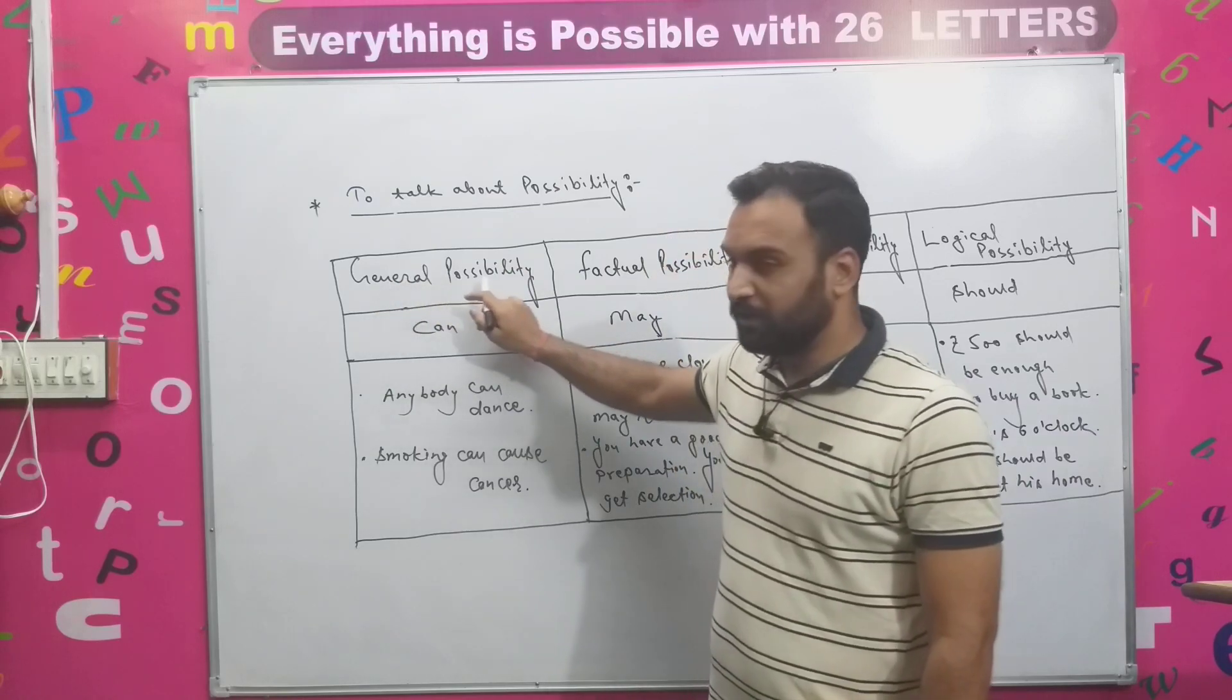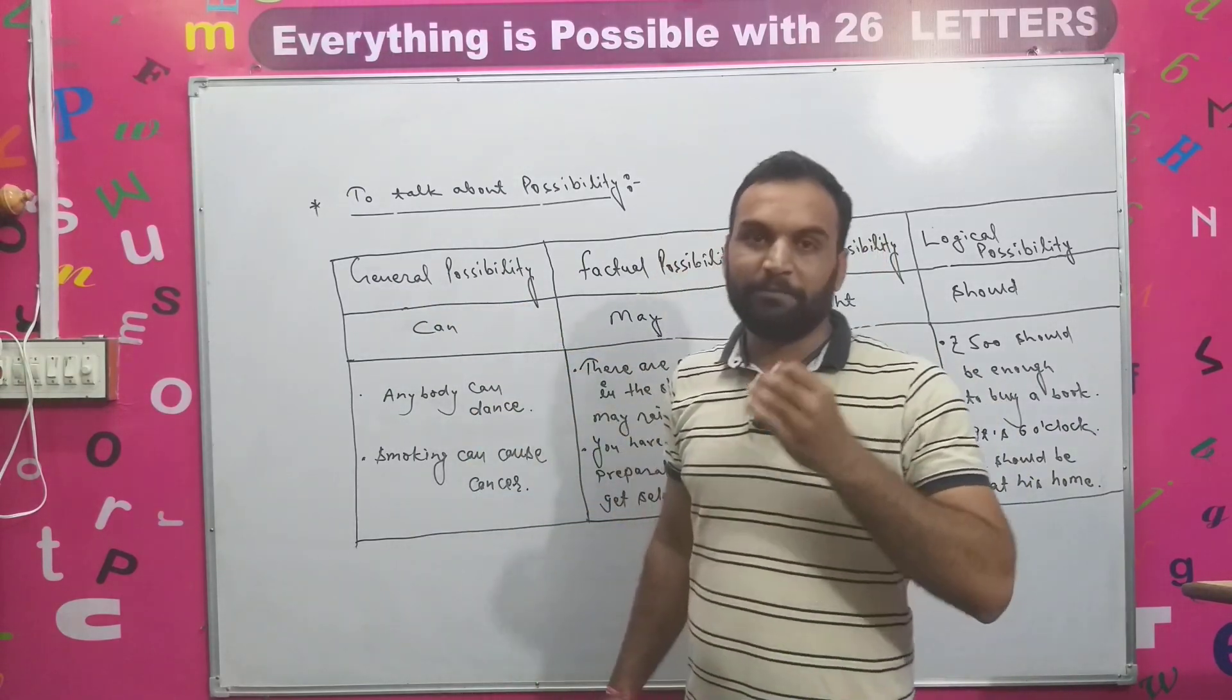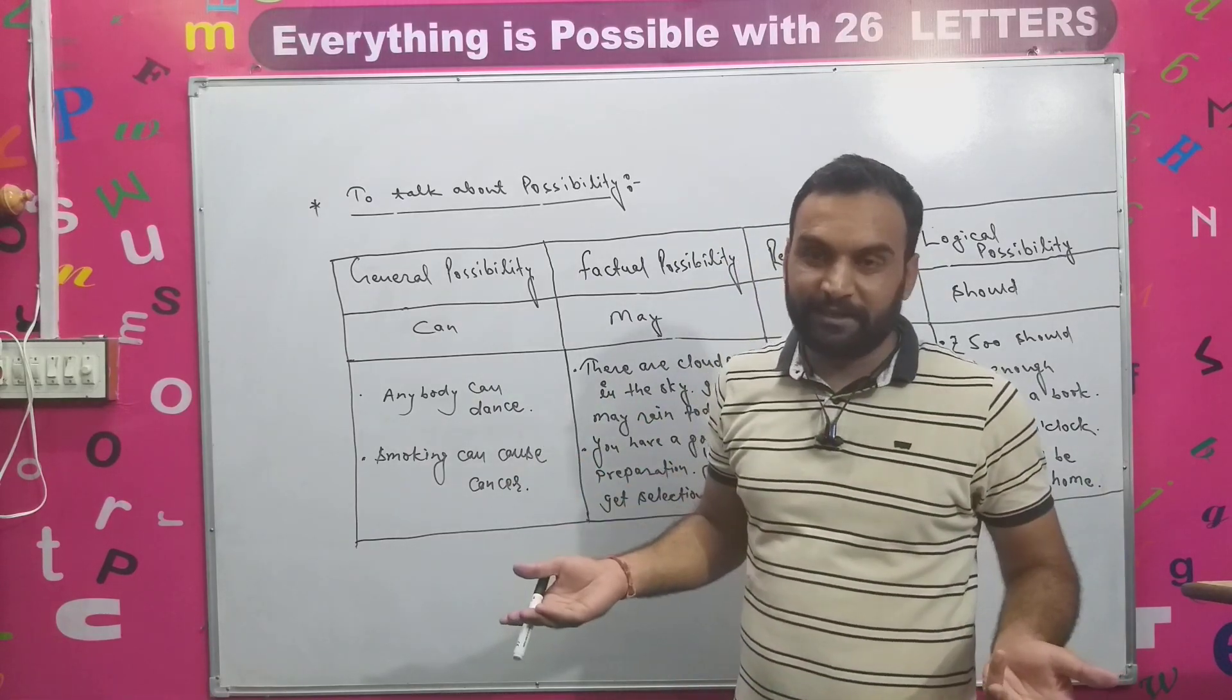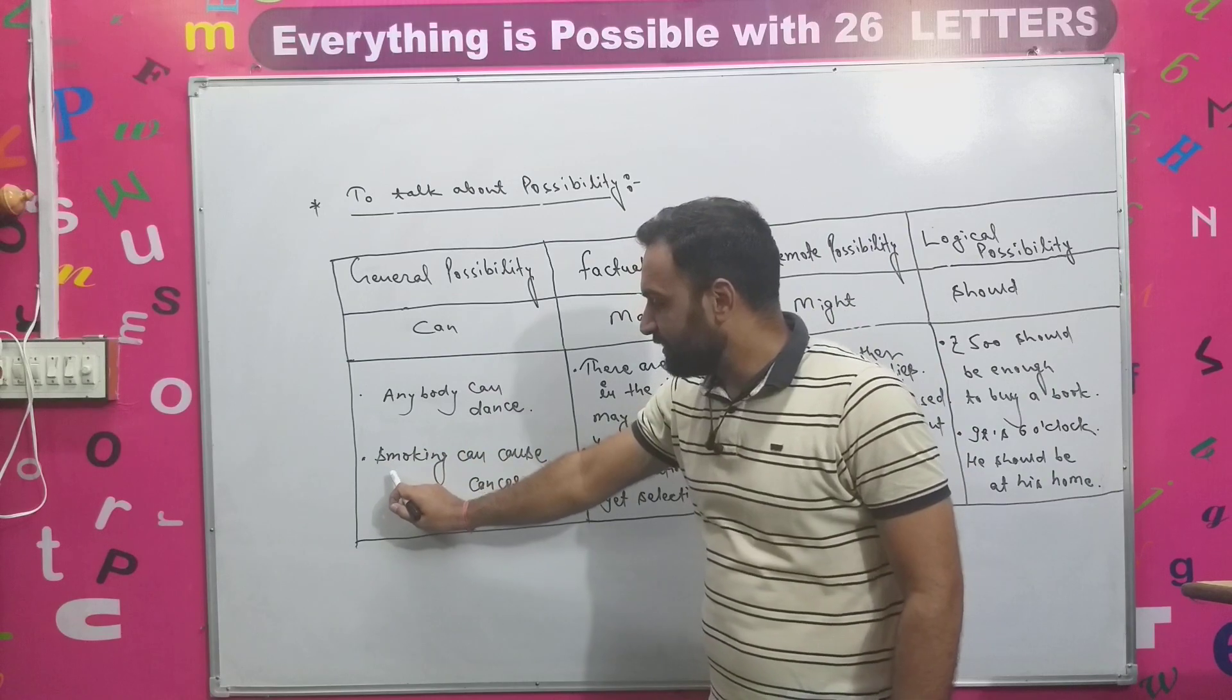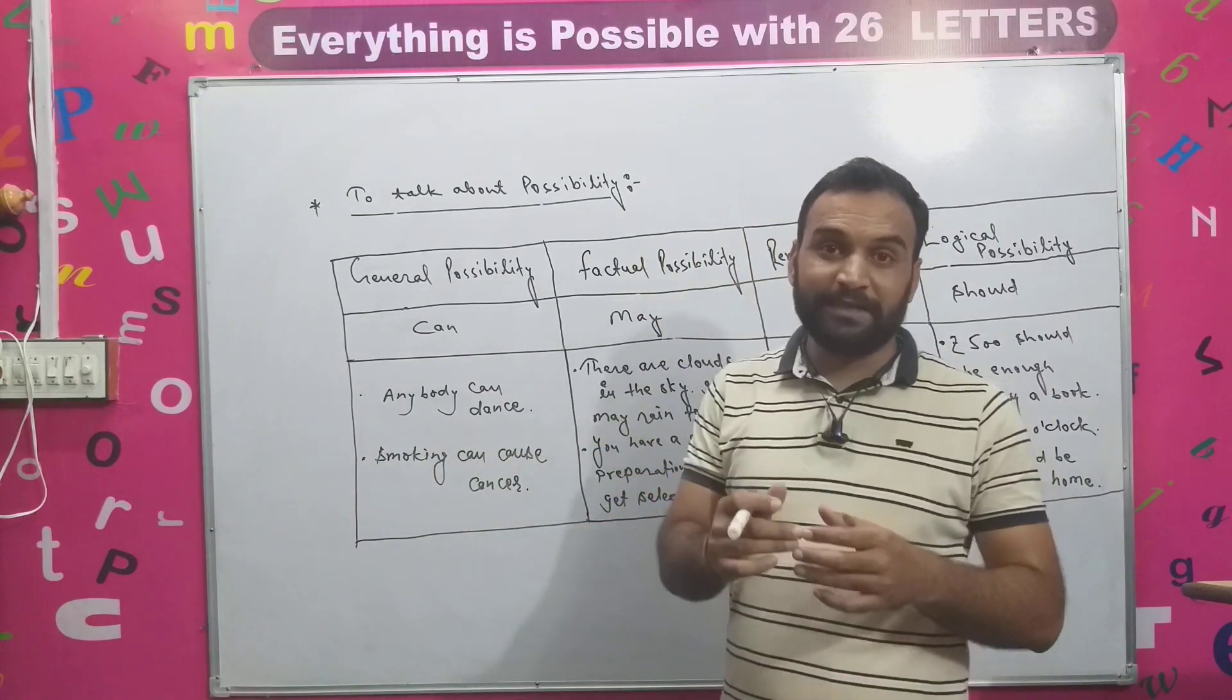So when we are talking about general possibility, you have to take the help of 'can'. And so if you can dance, you can do anything. So anybody can dance. Smoking can cause cancer.